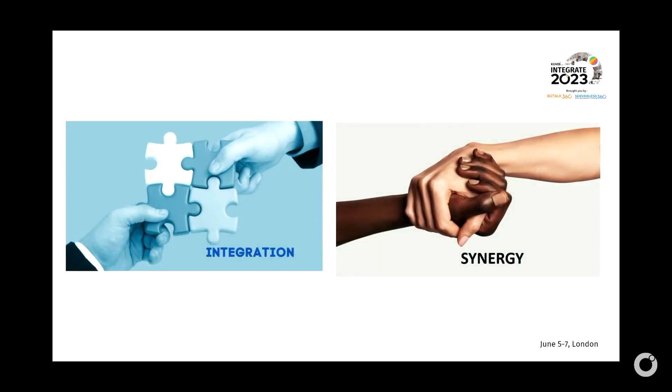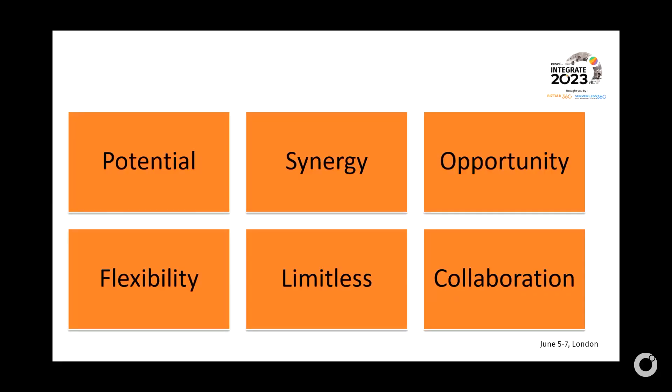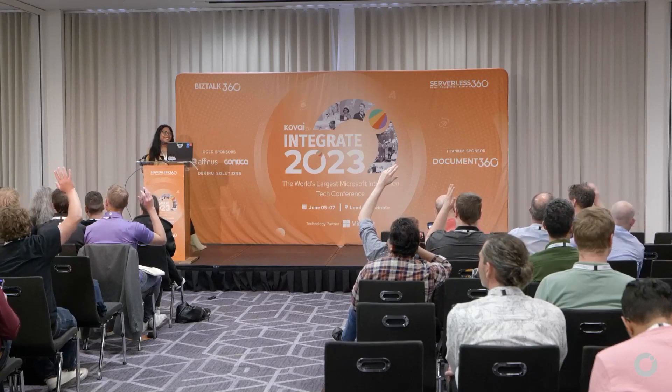When I think about integration, I relate it to synergy. I first heard the word synergy when I read the book 'The Seven Habits of Highly Effective People.' It means that two different things are combining their powers together to build something better. This is what I see as potential, opportunity, collaboration, and flexibility — and this is why we are here at Integrate conference, because we like integrating different things, whether on-prem, on cloud, or everywhere, code or low code.